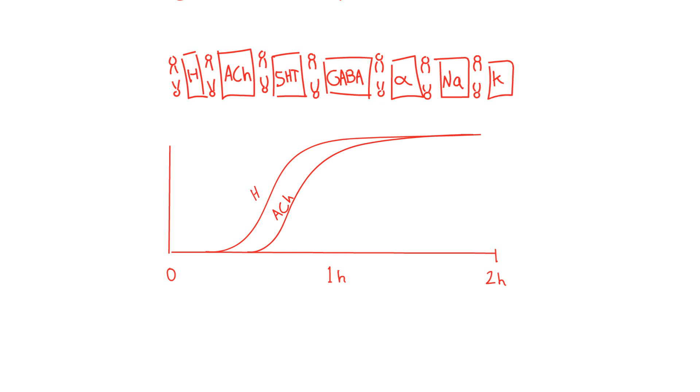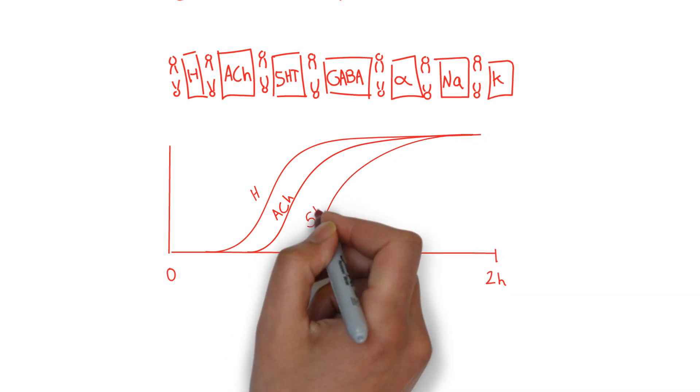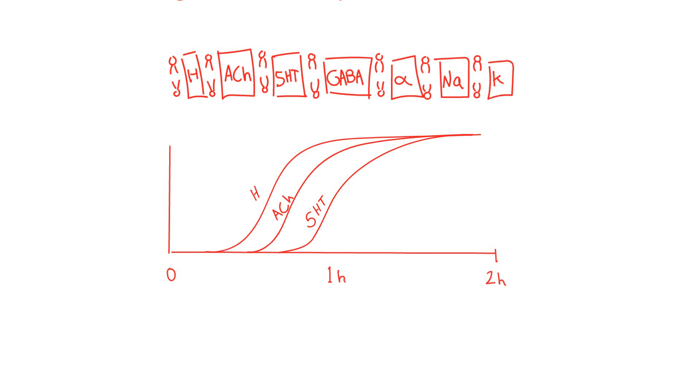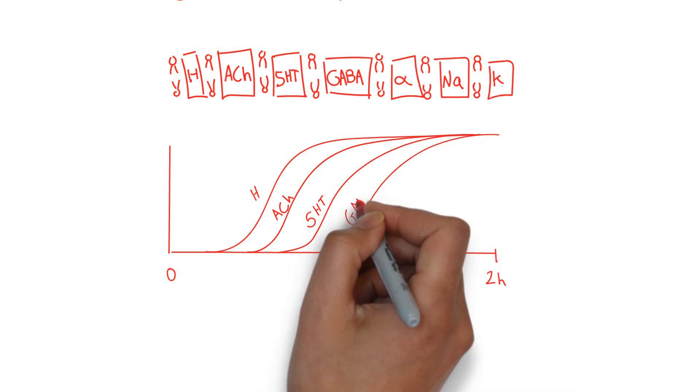The antiserotonergic effects synergize with the anticholinergic effects, producing hyperthermia and tachycardia. There may be clonus. In fact, myoclonus often heralds impending seizures created by GABA antagonism.